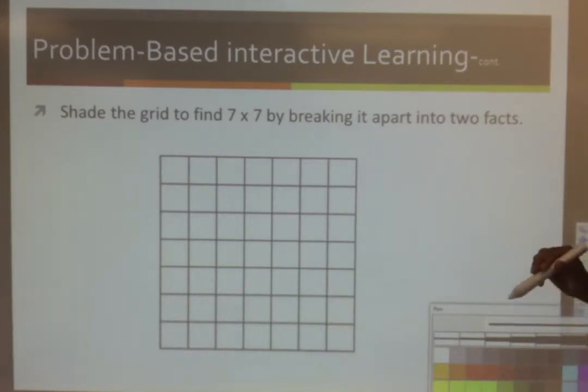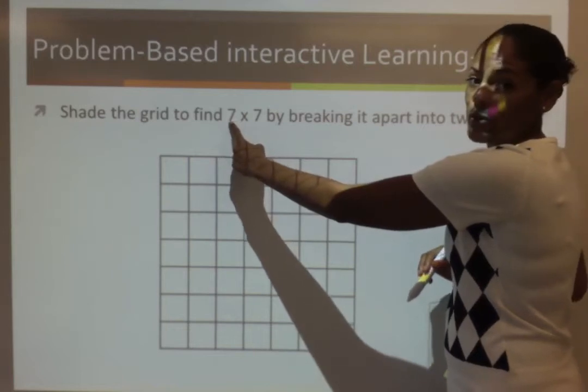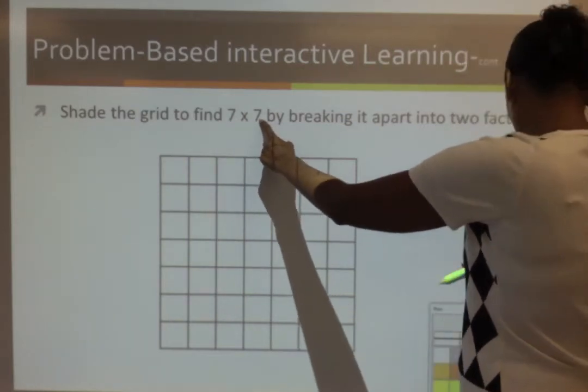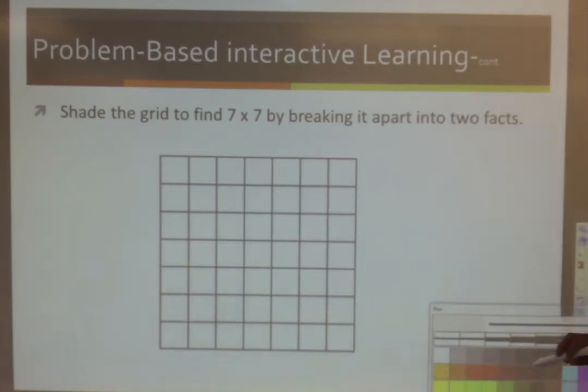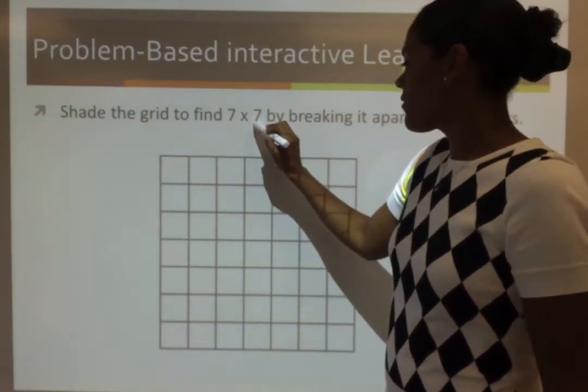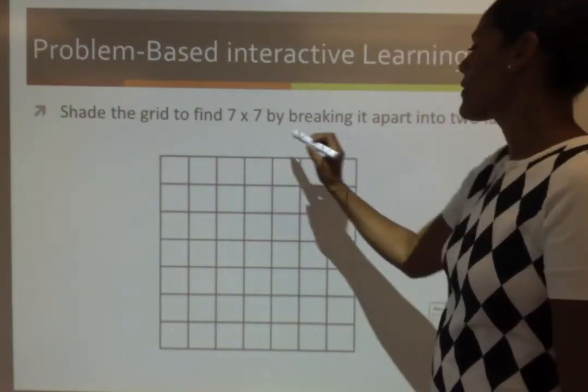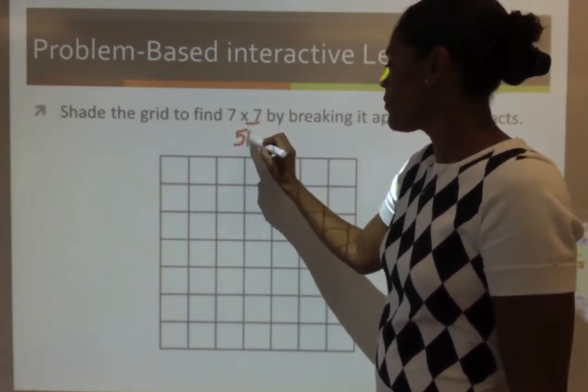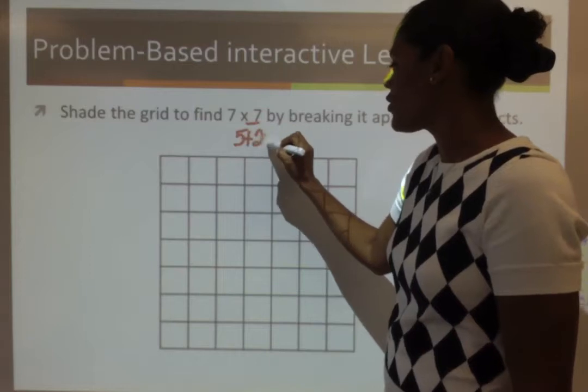I'm going to choose to leave my 7 rows, but I'm going to break apart the 7 columns. Can you figure out where I'm going to break apart? Can you figure out where I'm going to break that 7 at? I'm going to break it at the 5. So, in order, if I do 5, 5 plus 2 will give me 7.